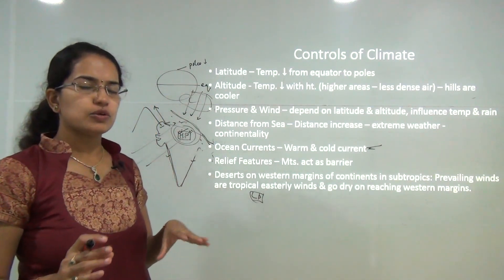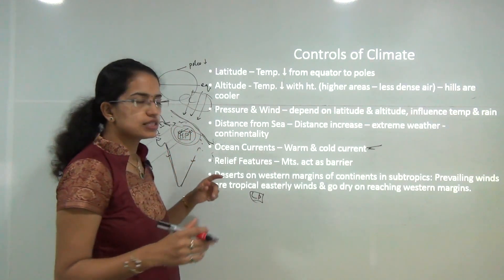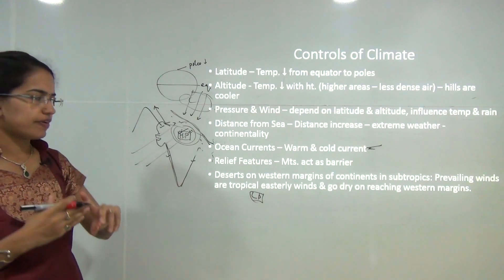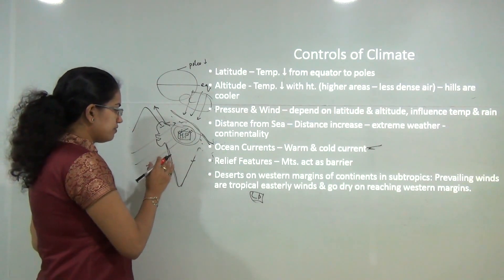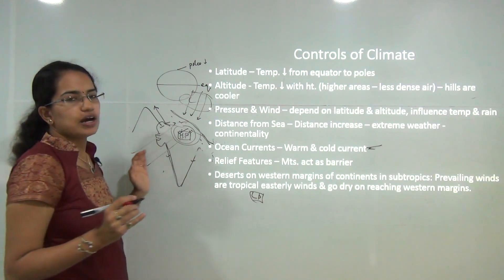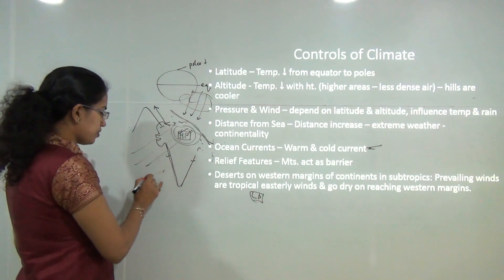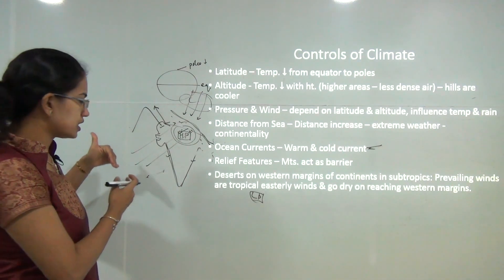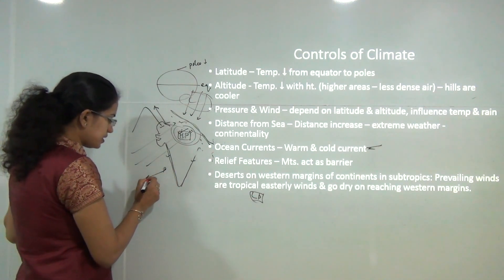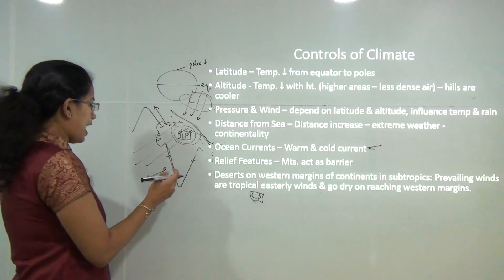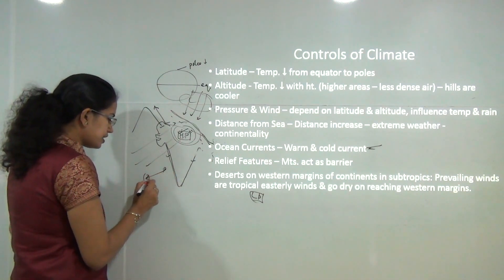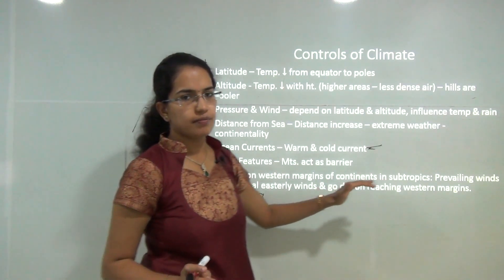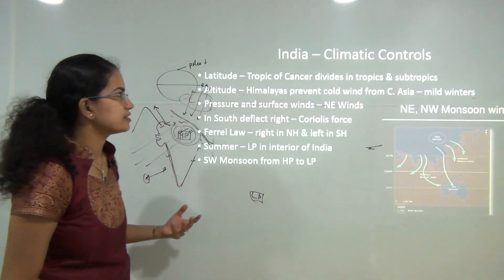Why are deserts predominantly located on the western margins in the subtropical region? In the subtropical region, the prevailing winds are easterly. As these winds travel from east to west, they become dry by the time they reach the western margins. Since they arrive dry, the western regions on the subtropical belt experience a desert type of climate.